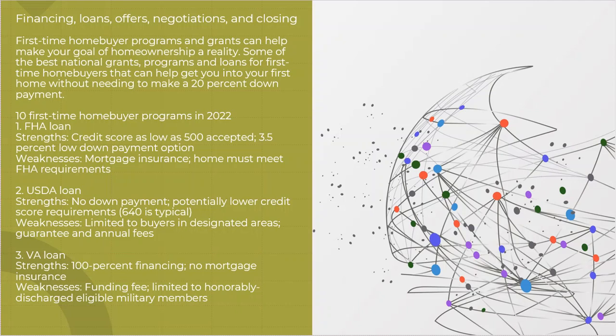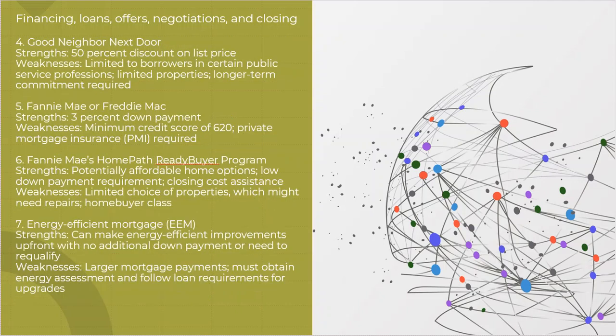There are things called the Good Neighbor Next Door Loan. It is for public service professionals, school teachers, firefighters, EMTs, nurses. They can get some HUD homes at a 50% discount in price. So that's the strength, it's a 50% off in the price of the house. The downside is it's one of their houses. So it's got to be a HUD home. And actually, you have to be in one of those services to actually qualify. So if you've got a guy that works at a factory, he's never going to qualify for the Good Neighbor Next Door, right?